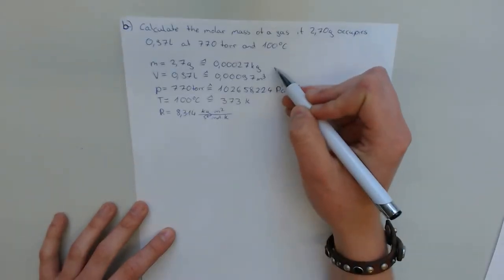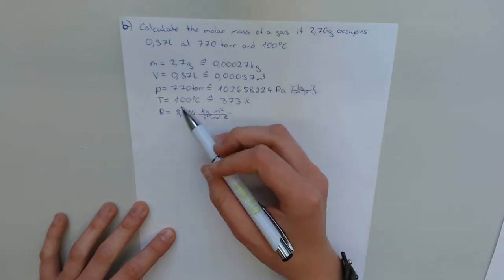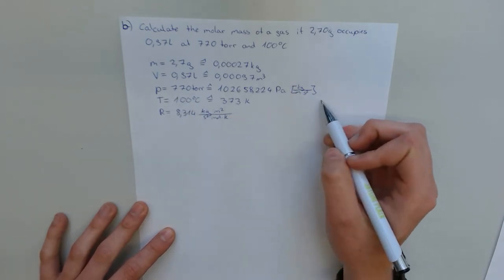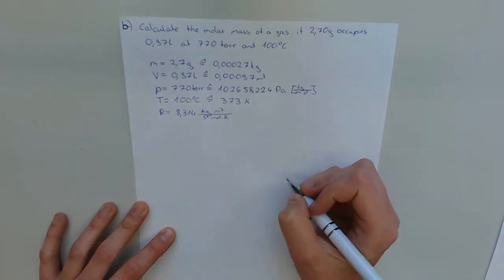The mass into kilogram, the volume into cubic meter, the pressure into Pascal, and also the temperature into Kelvin, and we also need the gas constant.